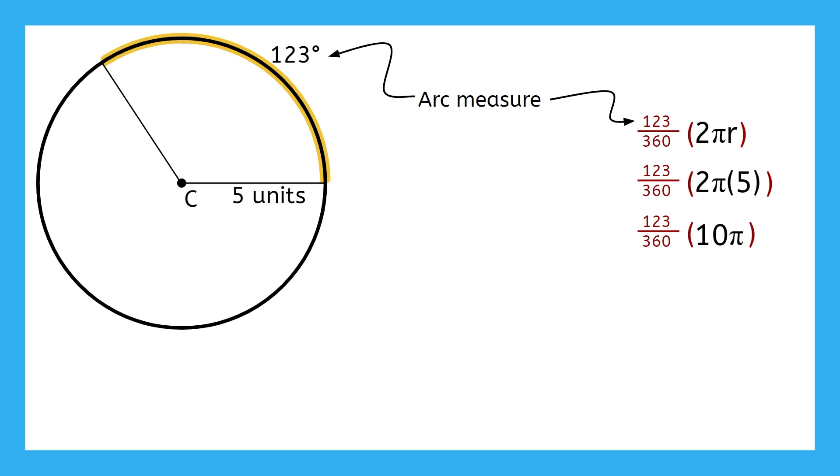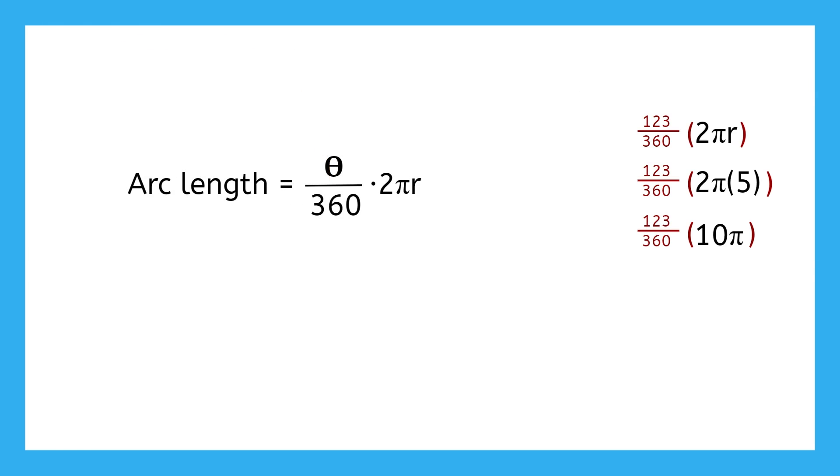Here's our formula. In this formula, we have the symbol theta, the symbol pi, and r to represent the radius. Remember, this part represents the arc measure, or central angle measure, and this part here represents the entire distance around the circle.